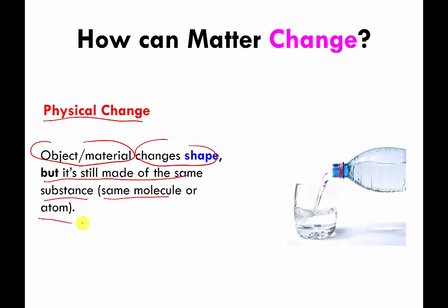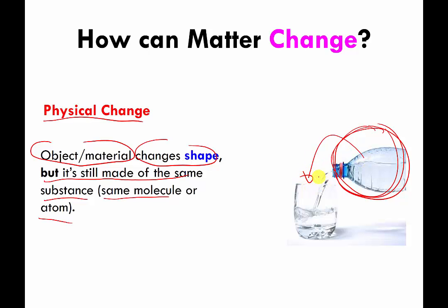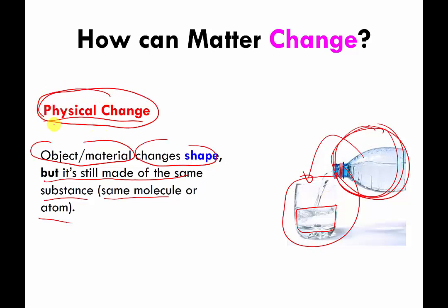The classic example of a material changing shape is liquid water in a container. If you have liquid water in a bottle, the water takes on the shape of the bottle. If you pour your liquid water into a glass, then the water will change its shape and roughly mimic the shape of the glass. So the water going from one container to the other undergoes a physical change.